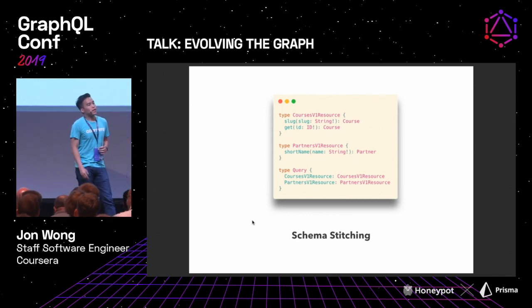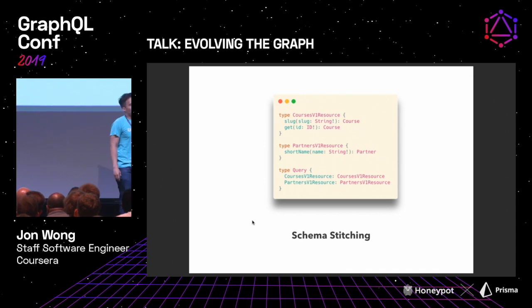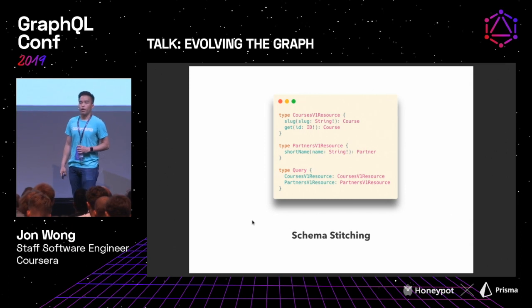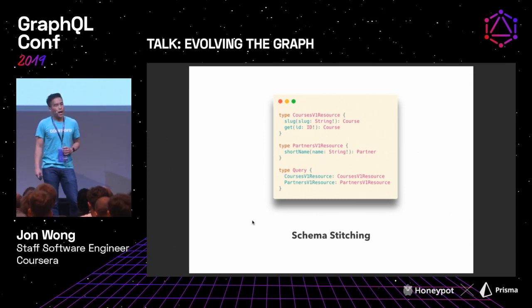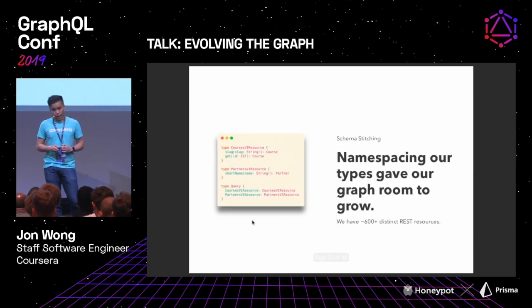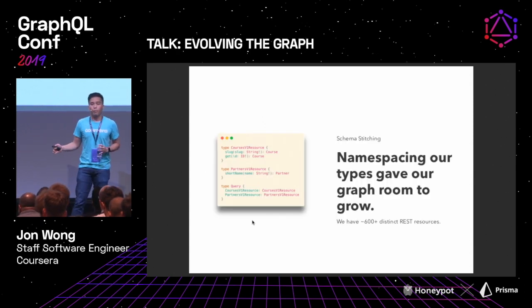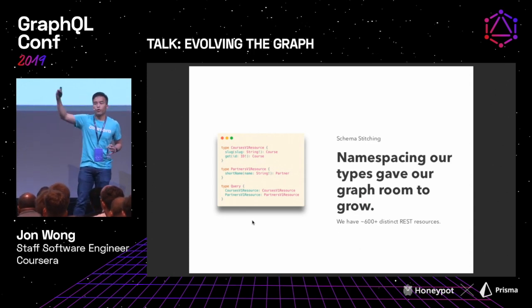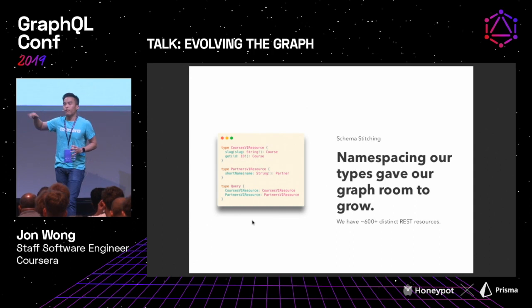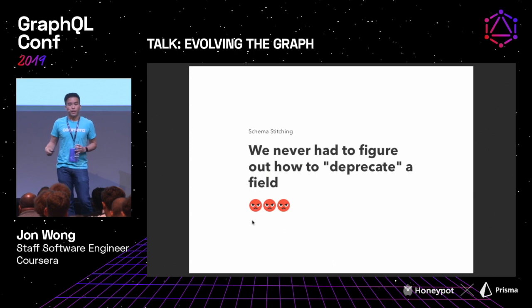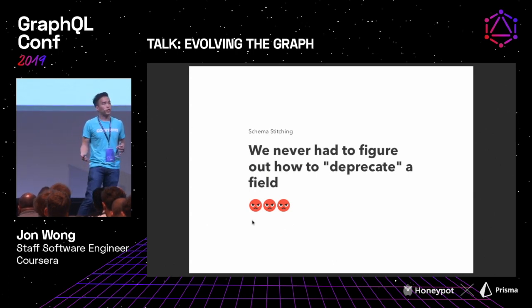With schema stitching, we made a really interesting decision to namespace all of our REST resources. This made it really simple to give a lot of room to grow — we didn't have to deal with backwards incompatibility because you could always add a new resource, a new version, or something else. But I actually think that was a bad thing, because we didn't have a game plan for when we actually had to change a field.